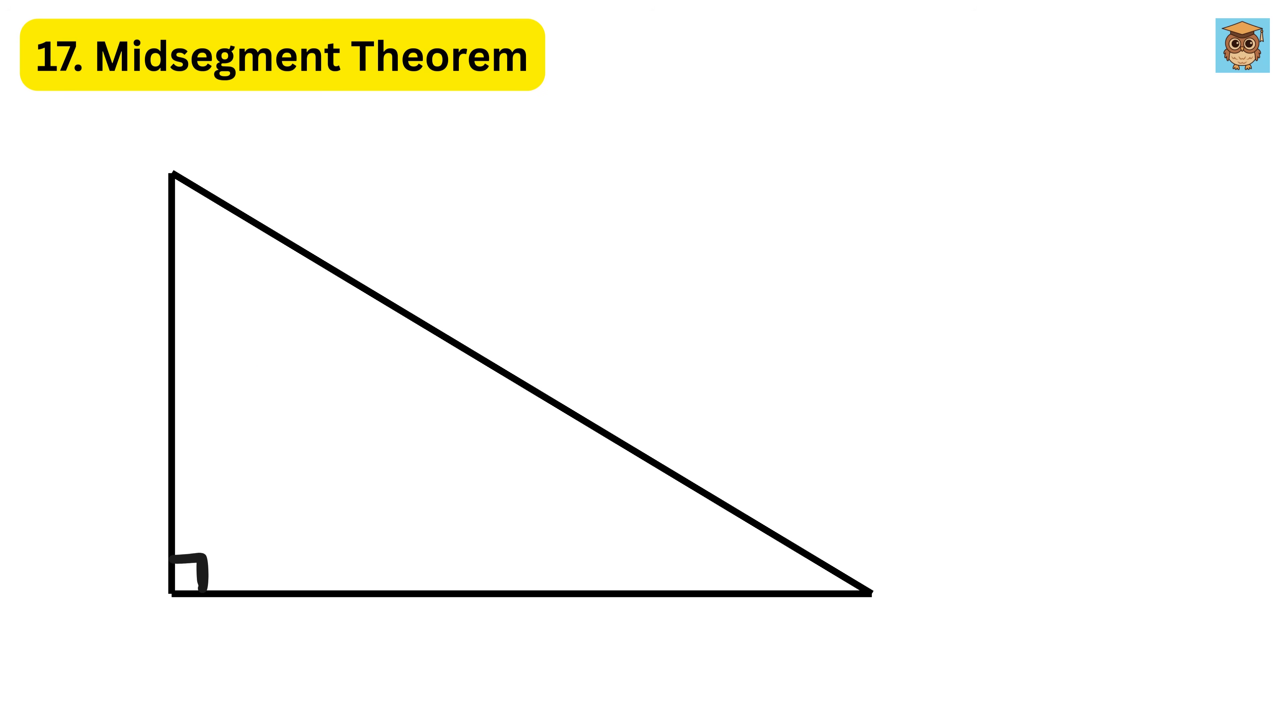For example, take a triangle with sides 6 cm, 8 cm, and 10 cm. If you find the midpoints of the sides measuring 6 and 8 cm and draw a line between them, this line will be the mid-segment. Since the third side of the triangle is 10 cm, the mid-segment will be 5 cm, which is exactly half of 10.